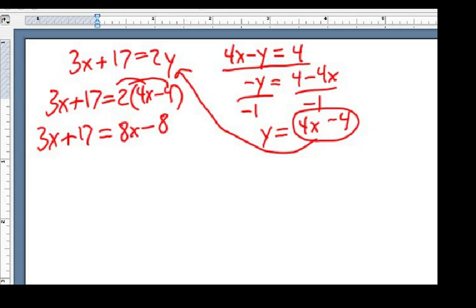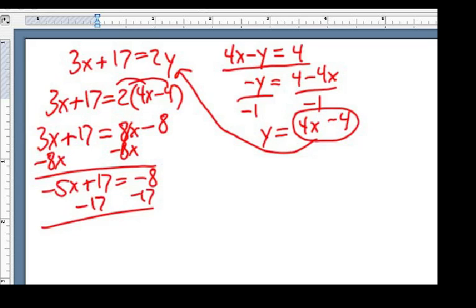Keep solving for x. Subtract 8x from each side. Negative 5x plus 17 equals negative 8. Subtract 17 from each side. Negative 5x equals negative 25. Divide each side by a negative 5 and I get positive 5.